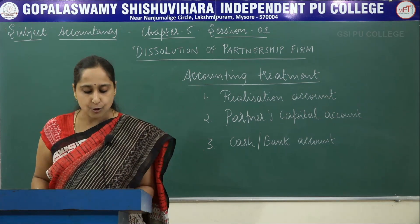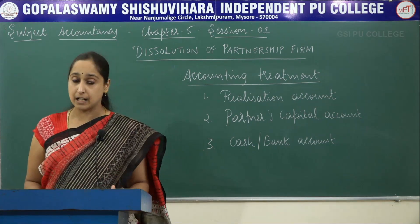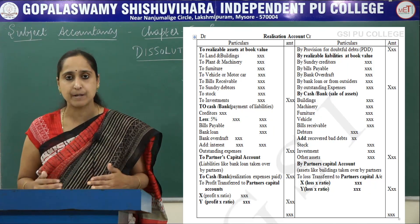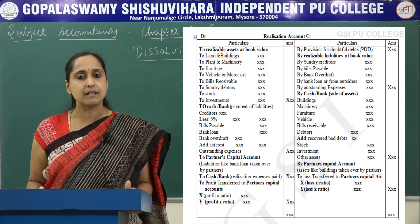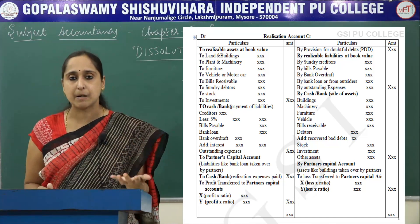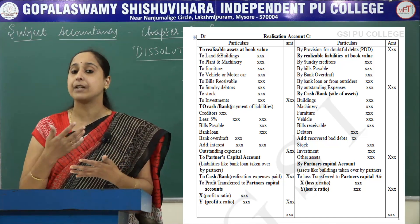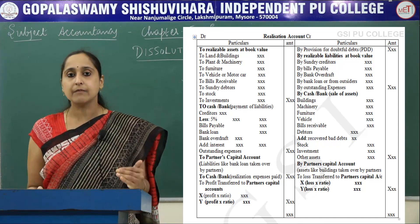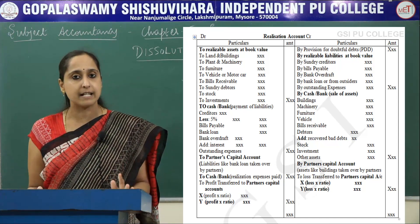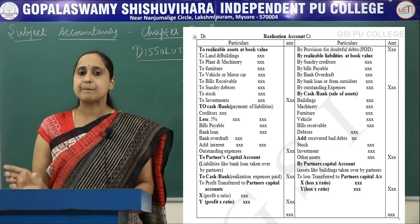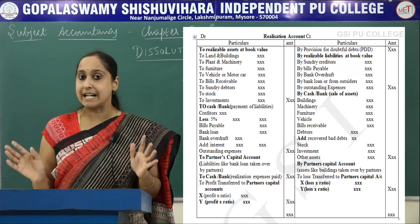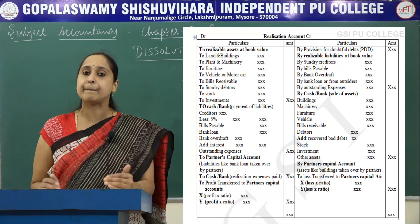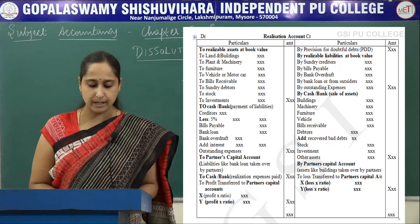Next is to Cash or Bank Account — suppose if there is any realization expenses. Realization expenses are expenses incurred in closing the firm. That expense amount is added to the debit side of the Realization Account.